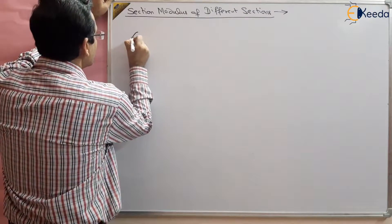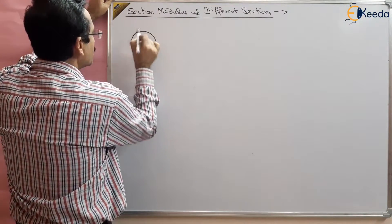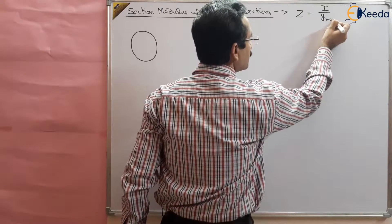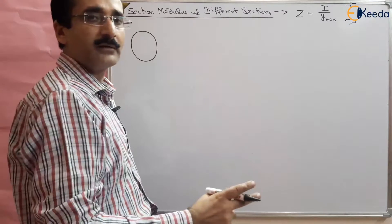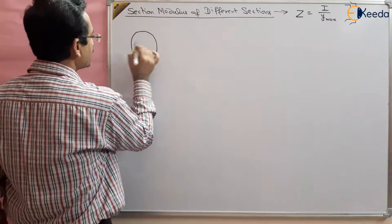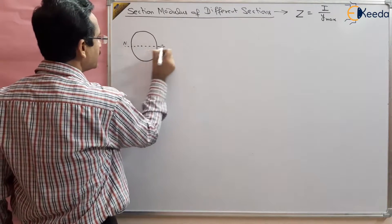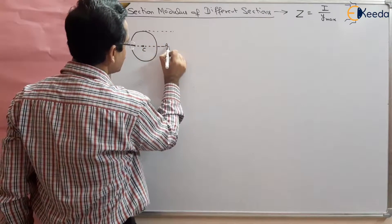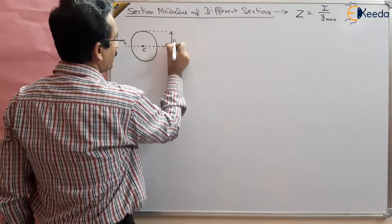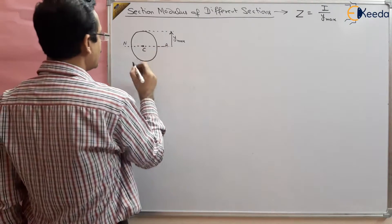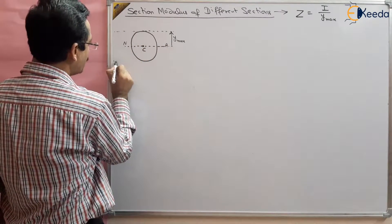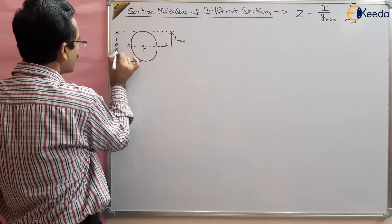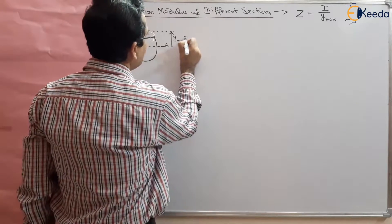Consider a circular section. For a circular section we want to find out the section modulus. By definition, section modulus is given by I by y_max. And what is y_max? It is the distance of the outer fiber of the material from the neutral axis. This is a circular section with a neutral axis passing through the centroid. The outer fiber distance y_max equals d by 2 — the radius.